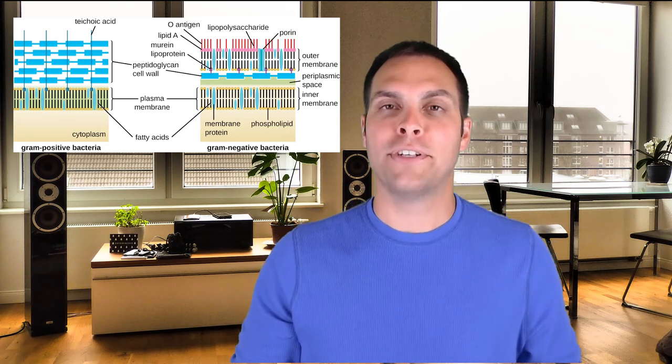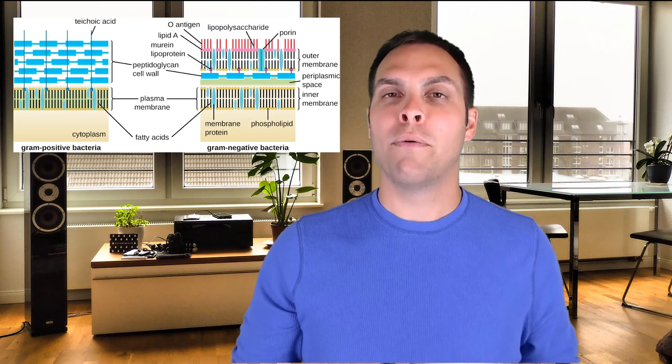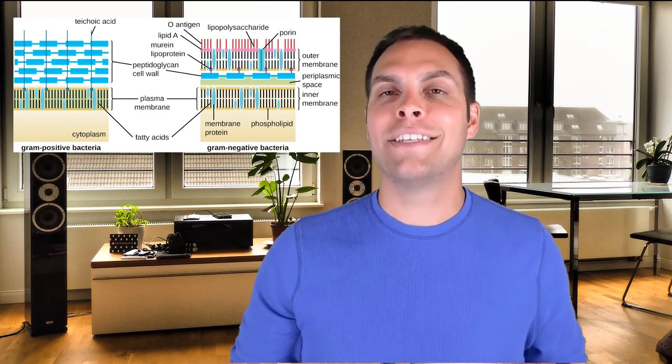Crystal violet primarily attaches to peptidoglycan. Since Gram-negative cell walls have very little peptidoglycan, they don't retain the stain well after decolorization and then pick up the red counter stain. That wasn't known initially when it was discovered, but it's the classic example of a differential positive staining technique — it's still considered positive because it stains the specimen and not the background, even though the result is called Gram-positive or Gram-negative.